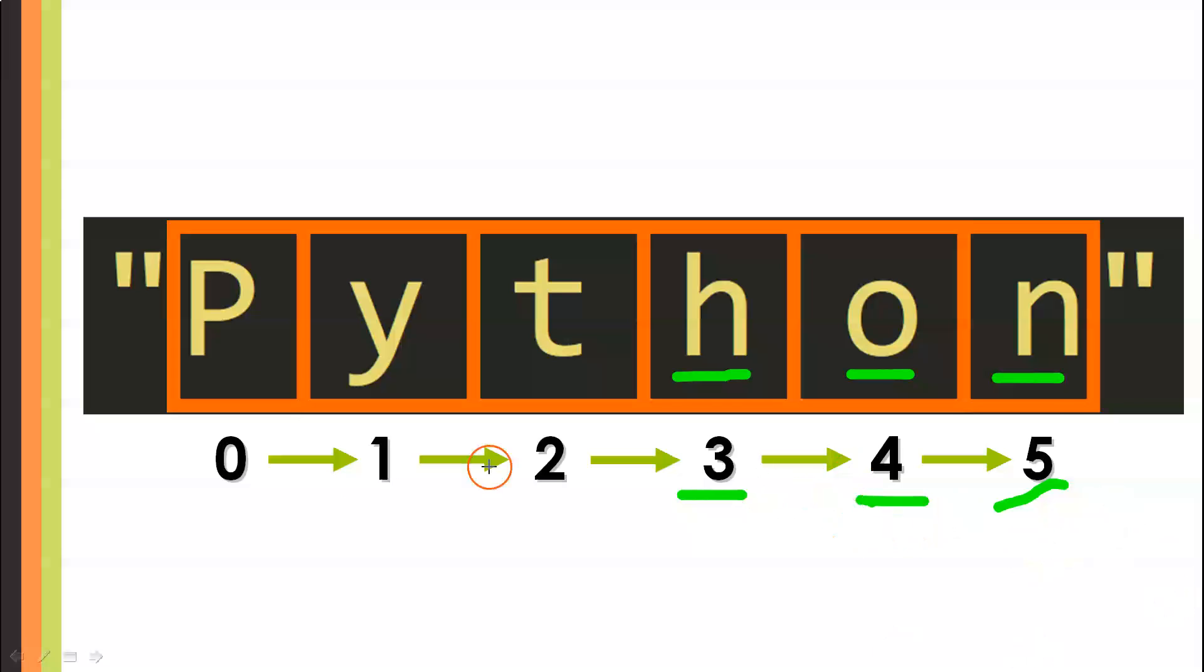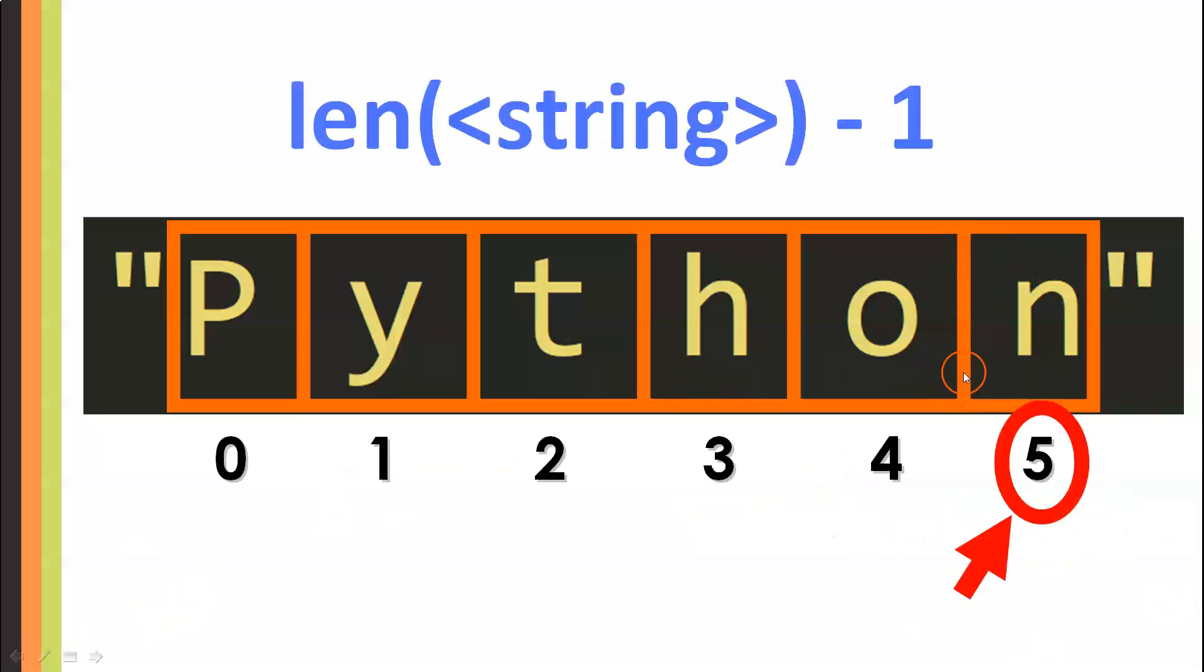Let's see something interesting right here. The last character of the string is located at index 5. The string has 6 characters, 6 letters, but the last index is 5, because we are starting to count from 0 instead of 1.